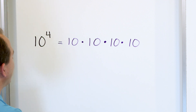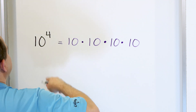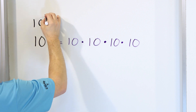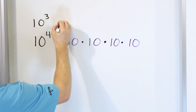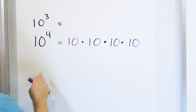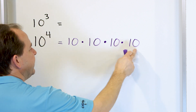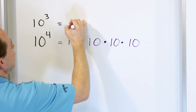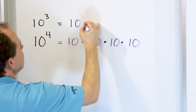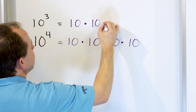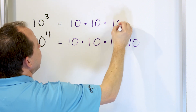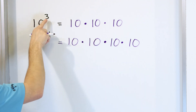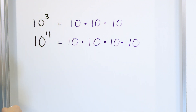Now what do you think is going to happen if we have the number 10 and we raise it to the power of 3? If 10^4 is 10 multiplied 1, 2, 3, 4 times, then 10 raised to the power of 3 is just going to be 10 multiplied by 10 multiplied by 10. There are only three 10s multiplied together because the exponent is a 3.